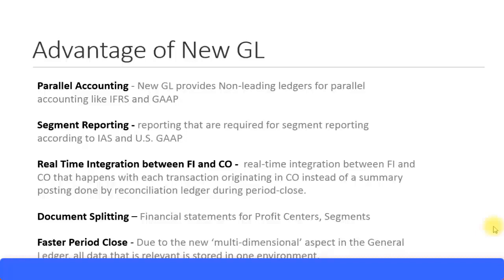So what are the advantages of using NewGL? For one, parallel accounting. NewGL provides non-leading ledgers for parallel accounting like IFRS and GAAP. These are some of the international accounting standards. Your normal ledger is called your leading ledger, and if you want to have parallel ledgers for specific accounting purposes based on international or country requirements, you can have a parallel accounting option. While posting the main ledger, you can have another ledger where the system also posts — so you can have two ledgers at the same time. That's the advantage of parallel accounting.